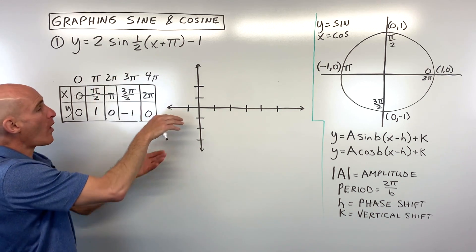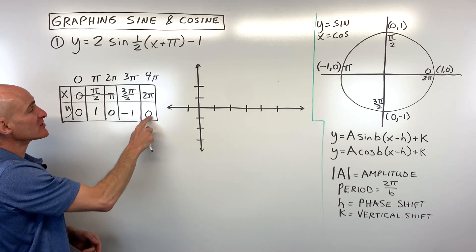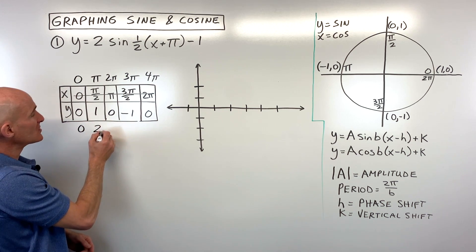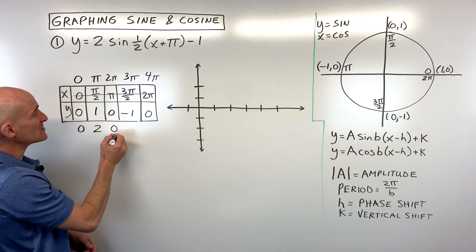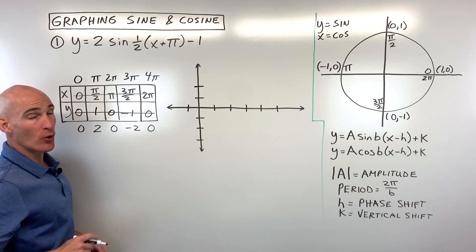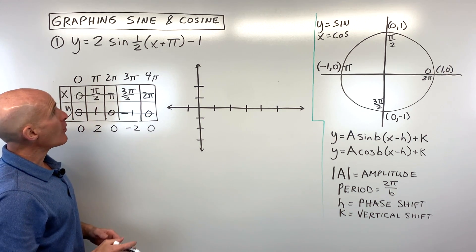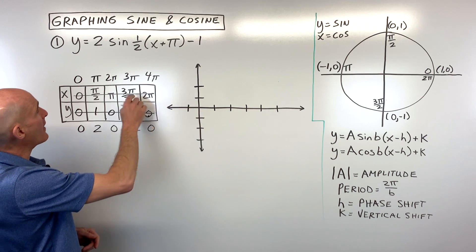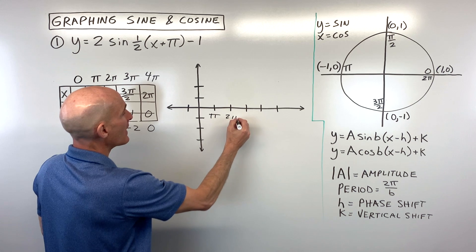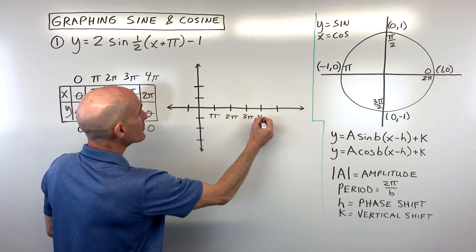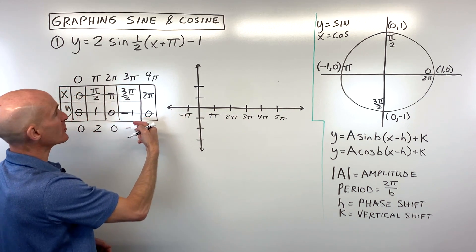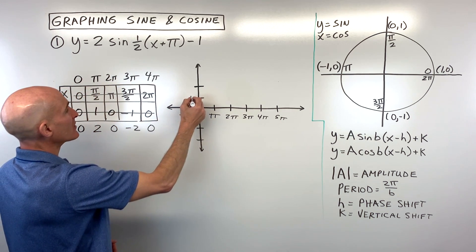This coefficient is going to affect all the y-values, so we multiply all the y-values by two: zero times two is zero, one times two is two, zero times two is zero, negative one times two is negative two, and zero times two is zero. Cross out those old y-values. Let's label our graph — starting at zero, counting by π's: π, 2π, 3π, 4π, 5π, and negative π in the other direction. On the y-axis we're counting by ones.